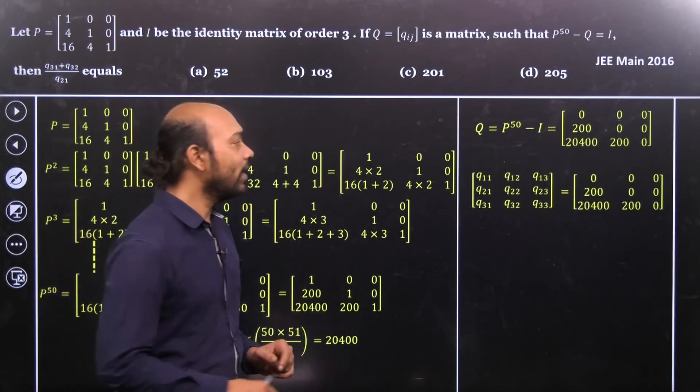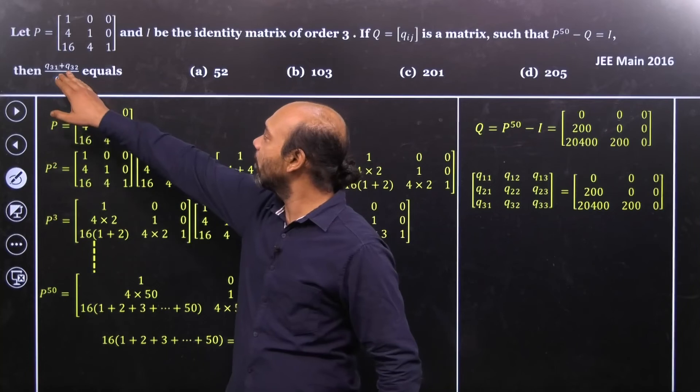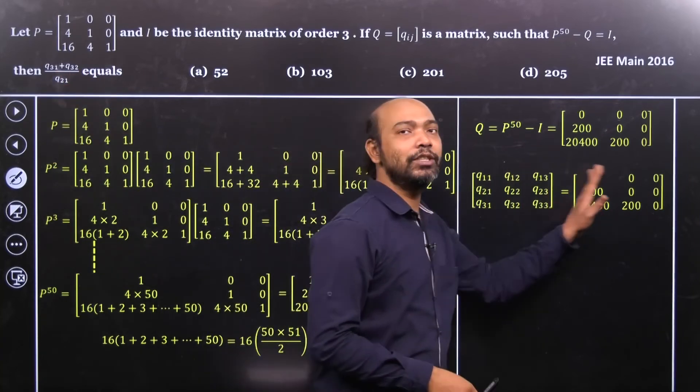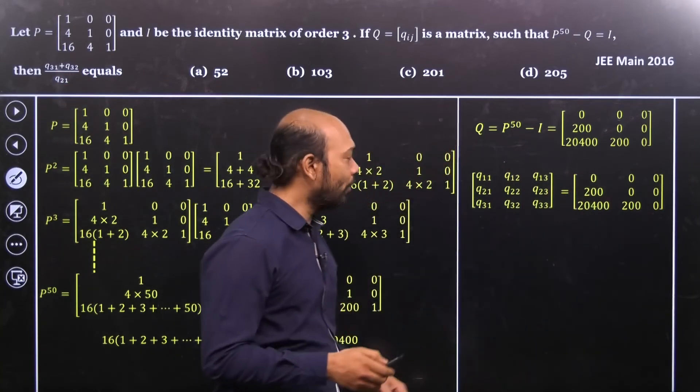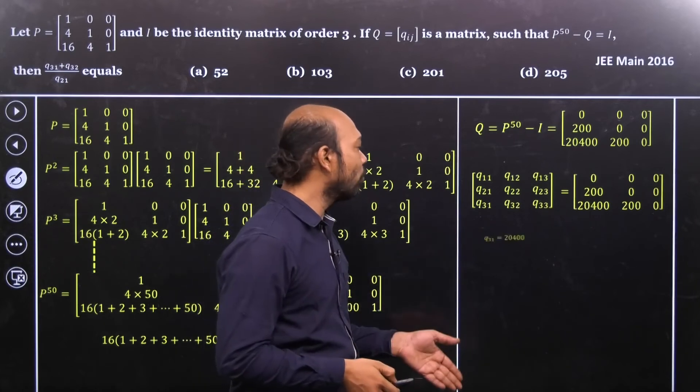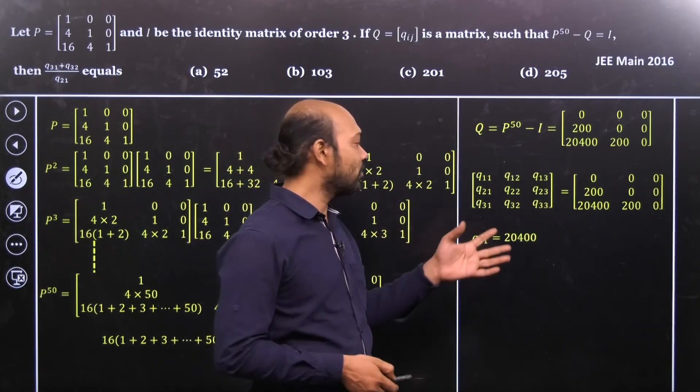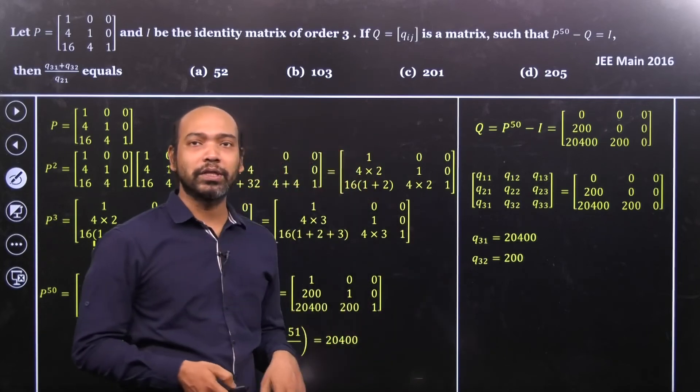Now our job is done. Why? Because see that here we are going to find out 31, 32 for Q values. So here we can compare each and every terms and able to obtain what is Q31, what is Q32 and 21. So let's calculate all those values.